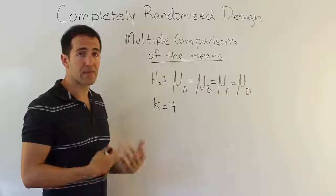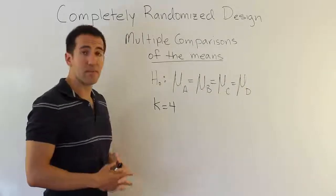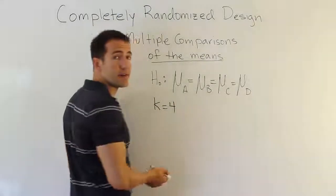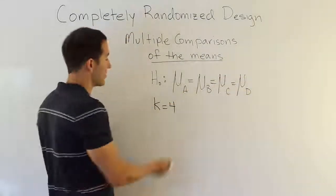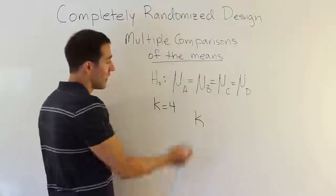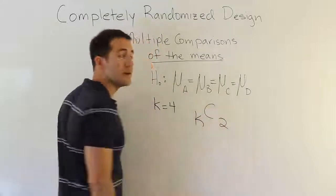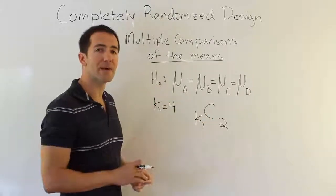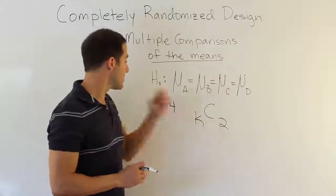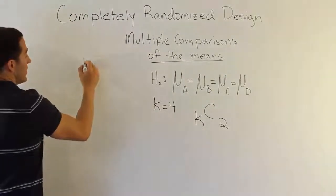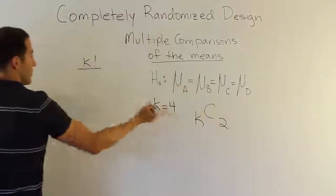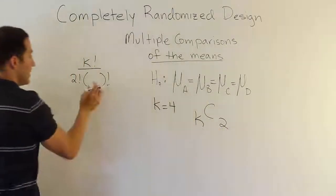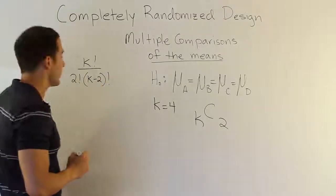Is that just coincidental, or is there a pattern in all cases? There actually is a pattern. You take the number of treatment means — call it k — and choose them two at a time to compare. This uses the combinations notation from Stats 1. You'd set it up as k factorial divided by 2 factorial times (k minus 2) factorial. That's how you set up the problem.